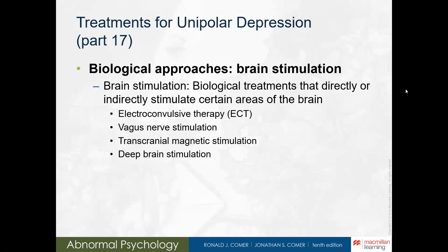Now we have brain stimulation. Biological treatments typically bring greater relief to people with unipolar depression, but for those who are severely depressed and don't respond to other treatments, they may include brain stimulation like electroconvulsive therapy. Researchers found they might also stimulate the brain by electrically stimulating the vagus nerve through a pulse generator implanted under the skin of the chest. This procedure brings significant relief to as much as 40% of those with treatment-resistant depression, though researchers don't yet know precisely why it reduces depression.